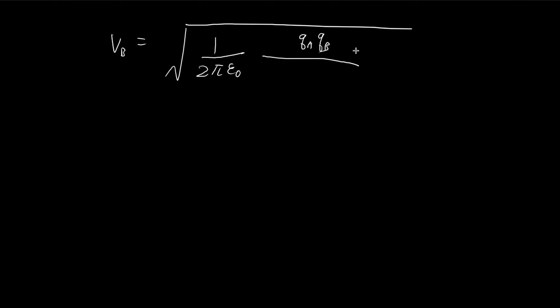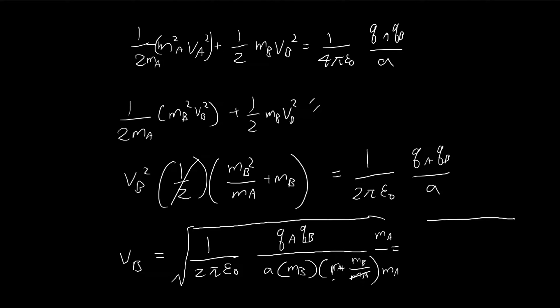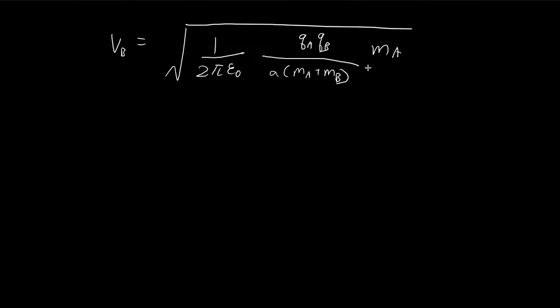And by doing that, the answer is going to look a lot nicer. So we get Ma plus Mb. So we get rid of this, and then this has gone inside. So on the outside, we have Ma divided by Mb. So this is a nice expression. Vb is equal to this.